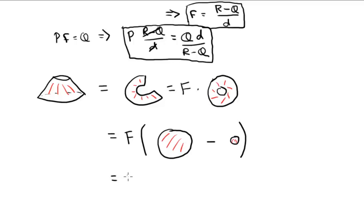But then this is f times, well, the area of the disk is π times the radius squared. So in this case, π times (p+d) squared, because that's the radius of this big disk, minus π times p squared, because p is the radius of the inner disk.